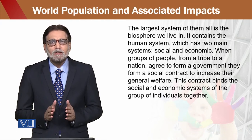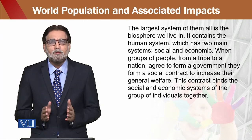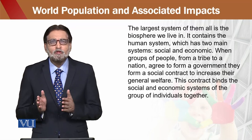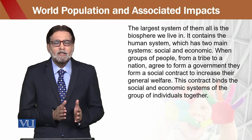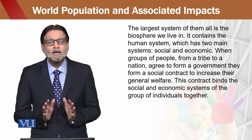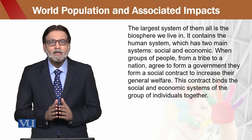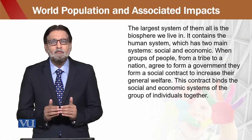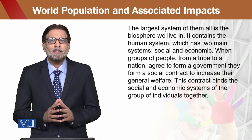अगर हमारी population जो है, वो appropriate नहीं हो गई — और जब मैं appropriate की बात करता हूँ, तो इससे मतलब यह है कि हमारी population जो हम estimation लेके चल रहे हैं, कि supposed है कि हमारी population कितनी grow करेगी — उसके साथ अगर वो align नहीं है, exact तो दुनिया में possible नहीं हो सकता, लेकिन उसके साथ align होना चाहिए. Variation इतनी कम हो कि वो variation acceptable हो, तो फिर हमारे लिए बेहतरी हो सकती है.